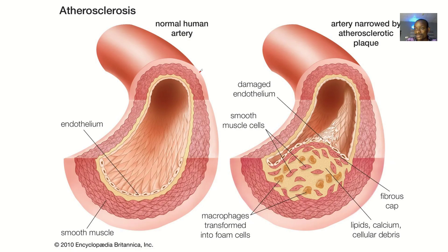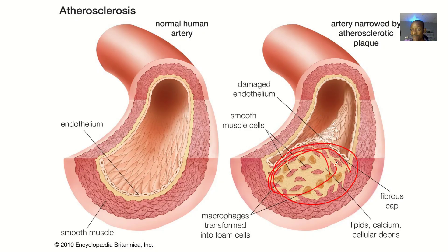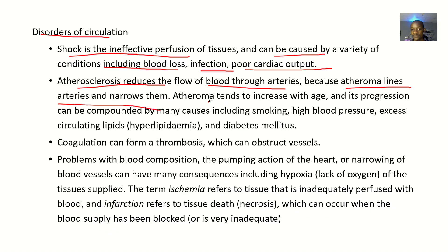The next disorder is atherosclerosis. Atherosclerosis involves the deposition of lipid at the sidewalls of arteries, and this leads to reduced blood flow. Atheroma — basically a deposition of fat — lines the arteries and narrows them. Atheroma tends to increase with age and its progression can be compounded by many factors including smoking, high blood pressure, excessive circulating lipids (hyperlipidemia), and diabetes mellitus. If you have any of these underlying conditions, atherosclerosis is triggered more.